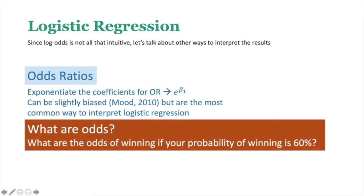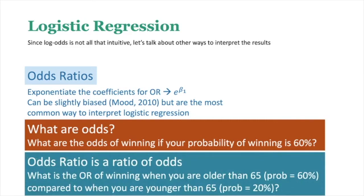When the odds are above 1, you have more of a chance of winning than losing. Below 1, it's the opposite. The odds ratio is a ratio of odds — odds are a ratio of probabilities, so an odds ratio is a ratio of ratios, which can be confusing at first.